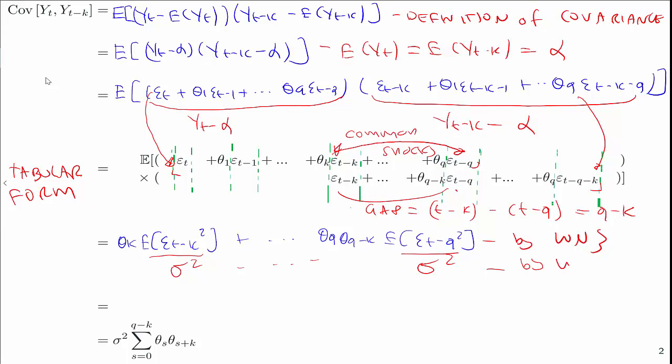And then finally, we note that all these epsilon t minus k squared down to epsilon t minus q squared are just all the variance of epsilon, which by white noise 2 are all equal to sigma squared. So we can take the sigma squared out. It's equal to this constant across, and therefore we get this sum here. This is the autocovariance of an MA(q) process, which we can write in this simplified form beneath. We can verify the two are equal by expanding it out.